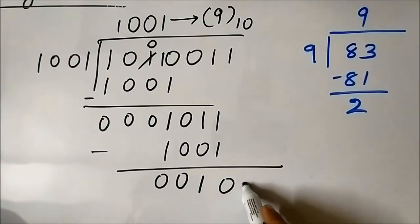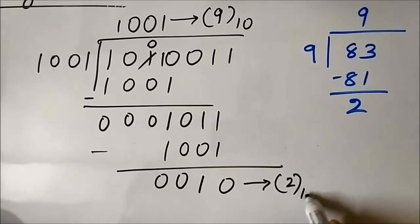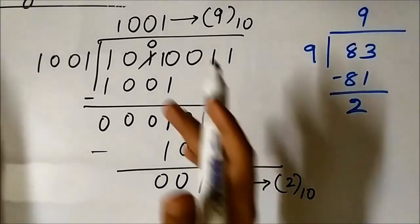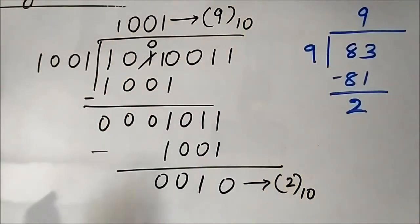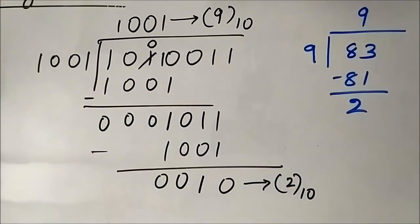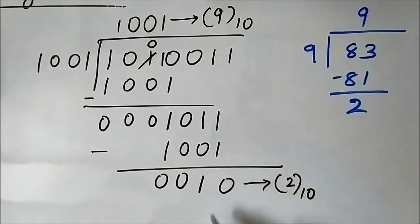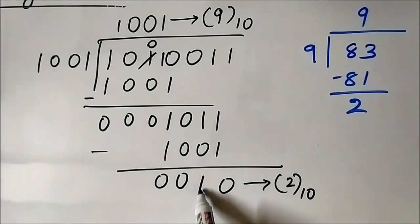The remainder is 0 0 1 0, which is 2 in decimal. The quotient is 1 0 0 0 1 in binary, which is 9 in decimal. So we got the same result — quotient 9 and remainder 2 — when performing the division in binary form.